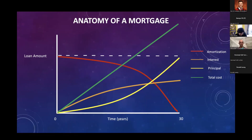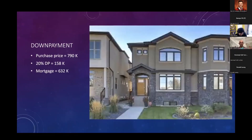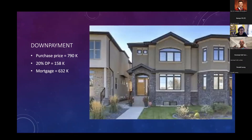Let's get into this in more detail. This is what we did — a purchase price of $790,000, with a 20% down payment. Generally speaking, you will have to make a 20% down payment on your home. If you choose to make less than that, you'll have to get mortgage insurance. You may get a better rate, but that mortgage insurance also comes with a cost. So in our case, the down payment was $158,000.